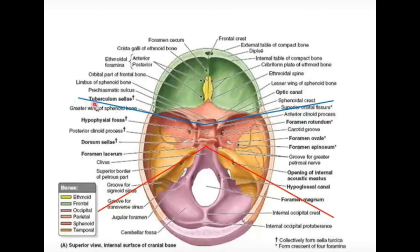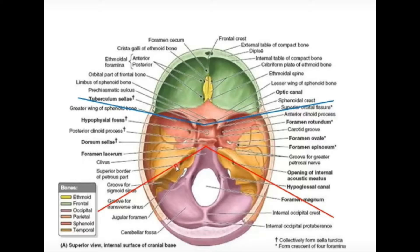The lines shown here in blue and red color are the borders of the posterior cranial fossa. Now first we will take the anterior cranial fossa.